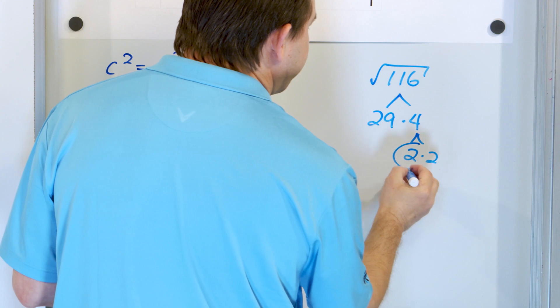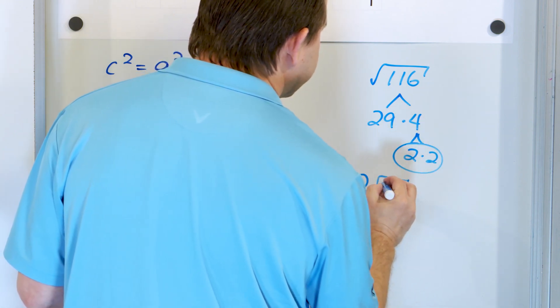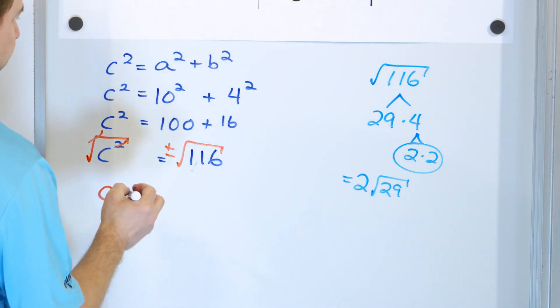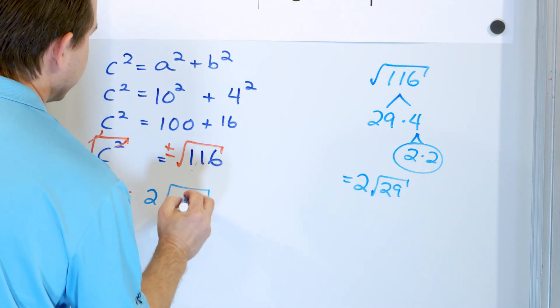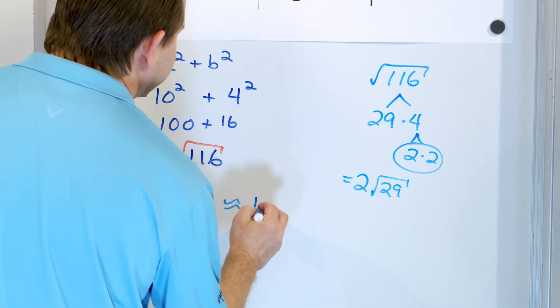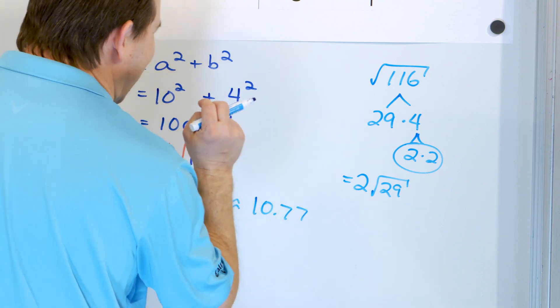So what you end up with is a pair of twos, which comes out as two times the square root of 29. So the two comes out, this stays under the radical. So it's 2√29, which is approximately equal to 10.77. And it's rounded, of course.